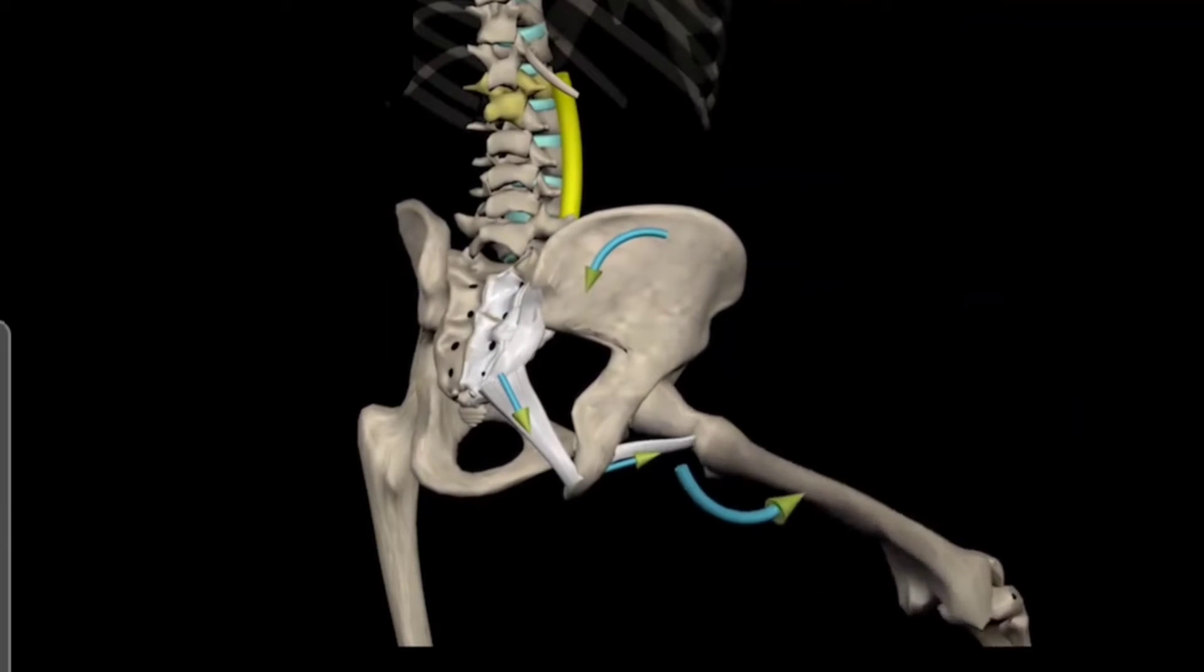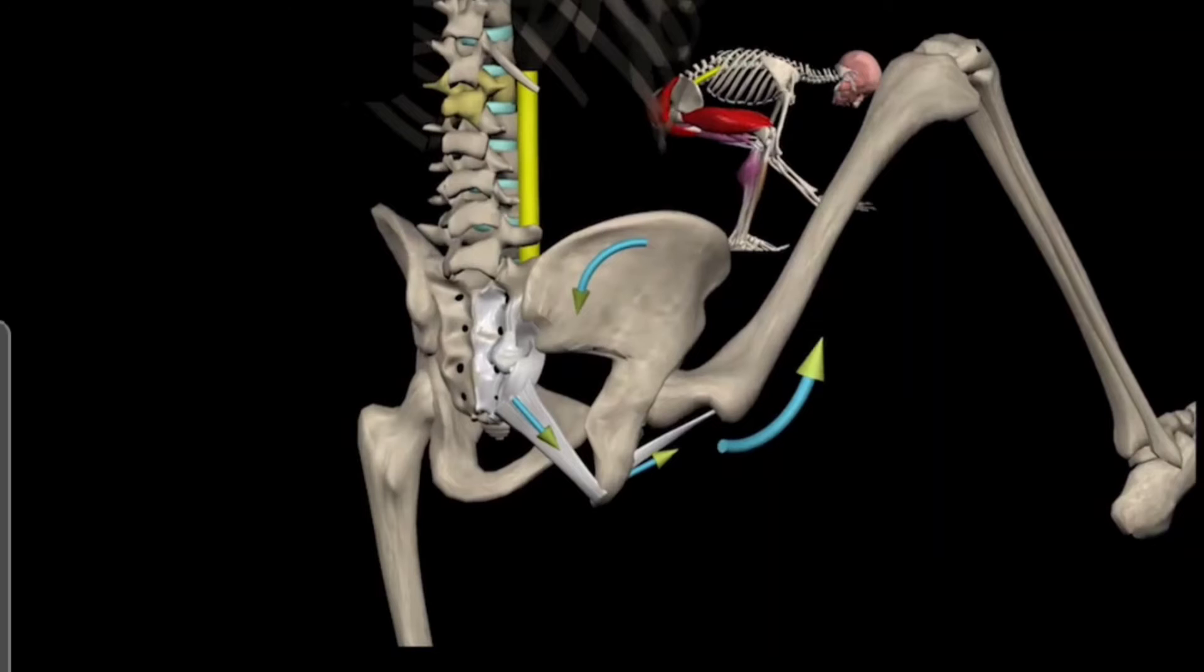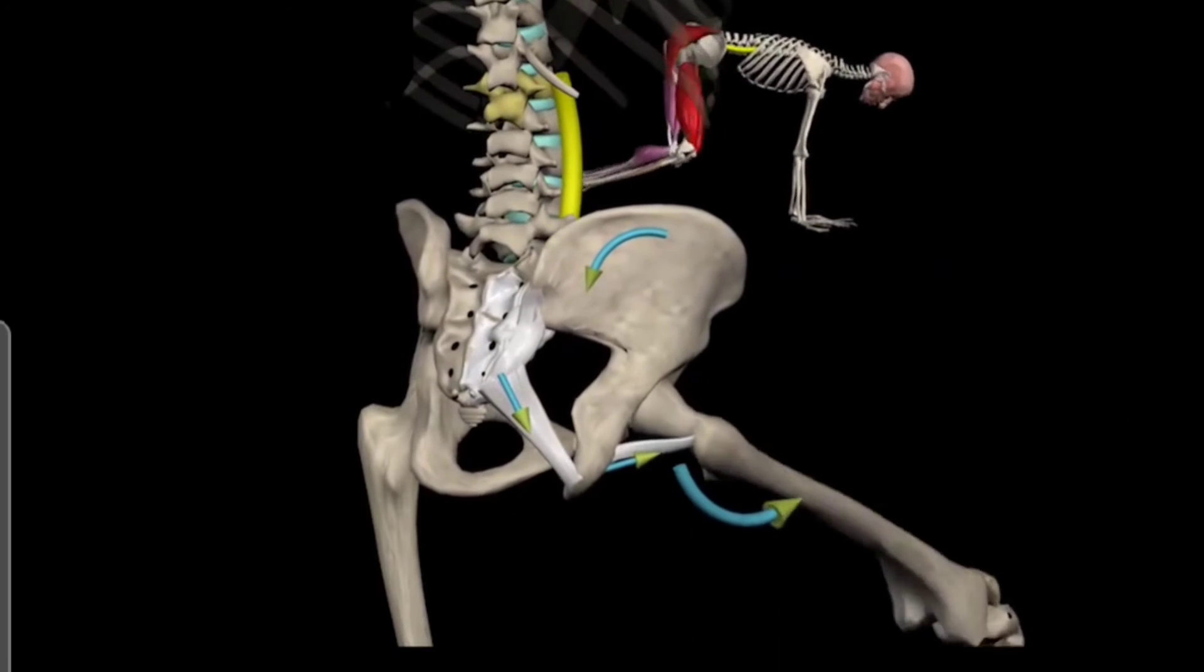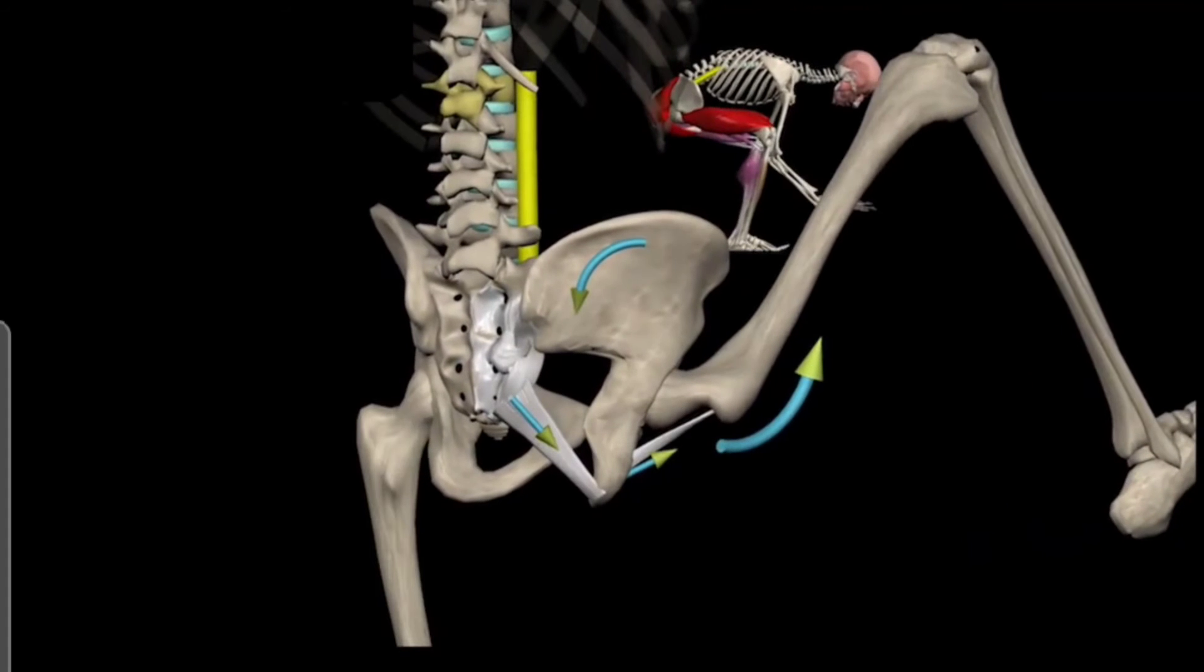The deep flexion at the hip may create a posterior pelvic tilt due to a limited range of motion in the hip joint. This action will repeat twice during the exercise: when reaching the floor after the squat, and then from the plank position back to the squat.